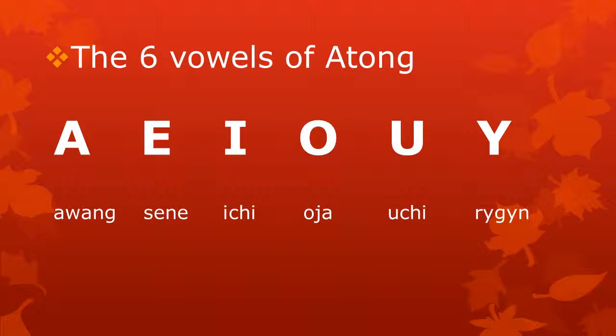In the previous video, we learned that Atong has six vowel sounds. These vowel sounds are written with the letters A, E, I, O, U, and E, as we can see here.